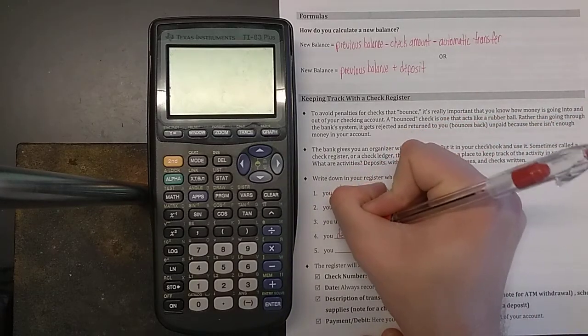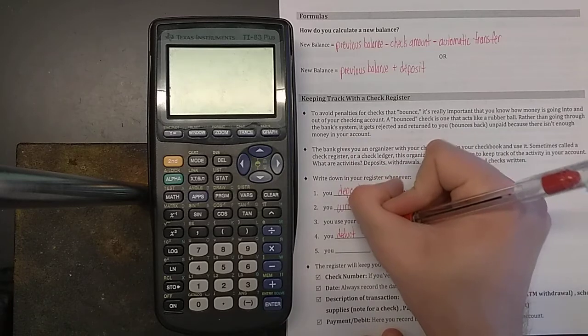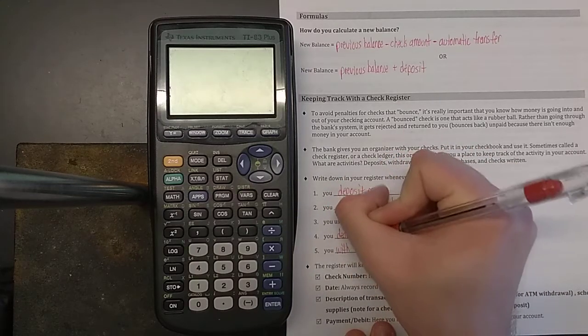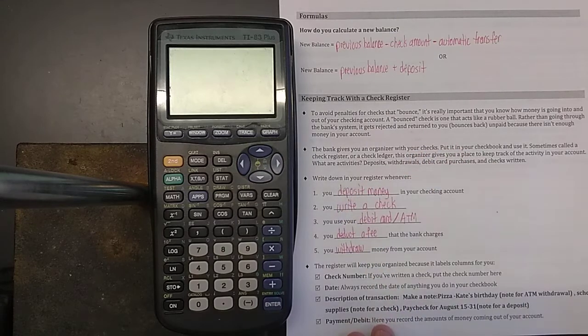Whenever you write a check that eventually goes to someone else and that money comes out of your account, whenever you use your debit card or you get money out in an ATM, you should record this by hand in your check register. Whenever you have to pay some sort of fee that the bank charges, whenever you deduct a fee, that means the bank's charging you for some use. You've got to pay that money. You should record that. And whenever you withdraw money from your account.